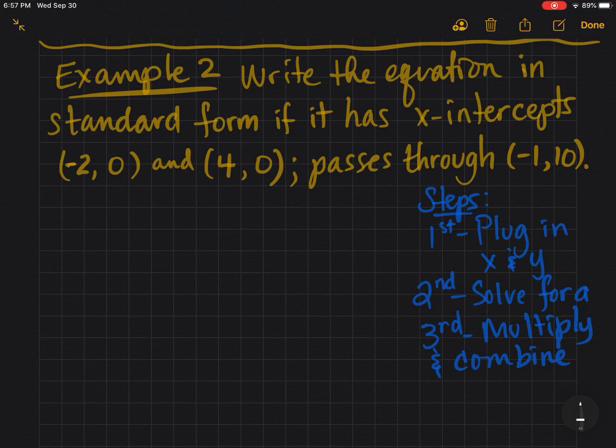Example 2: Write the equation in standard form if it has x-intercepts (-2, 0) and (4, 0) and passes through the point (-1, 10). Because we're starting with intercepts, we're going to start with intercept form.